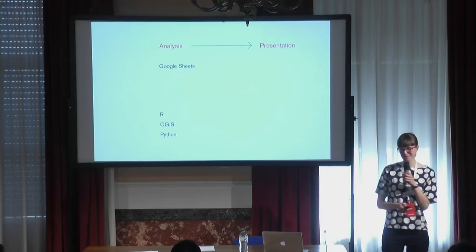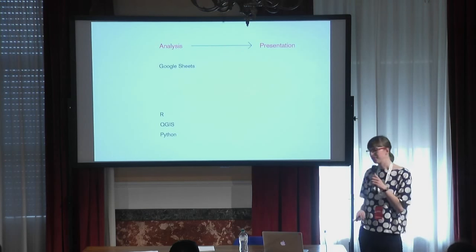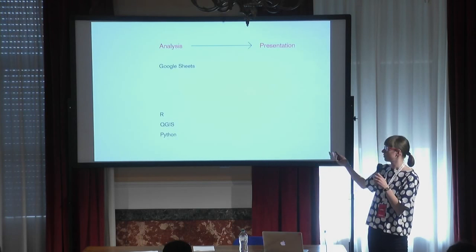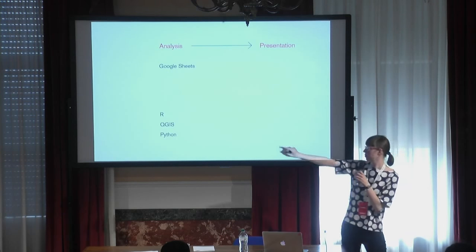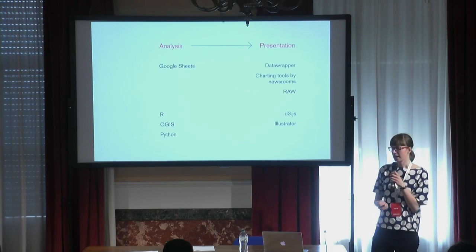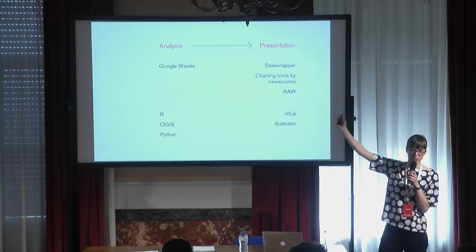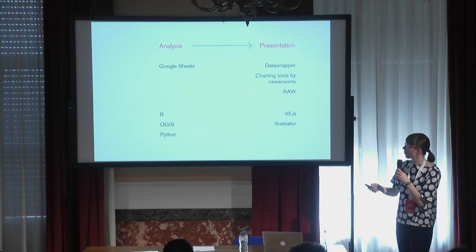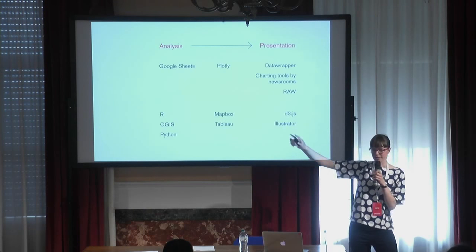There are many, many tools that do exactly these two things — this is just a selection. There's spreadsheet software like LibreOffice, Excel, Google Sheets, and then more code-based tools like R, Python, and QGIS, which is more for maps. When you want to present something, there are tools created by newsrooms: Datawrapper, the charting tool I work for, there's RAW, and then tools like Adobe Illustrator. I'll explain all these later.